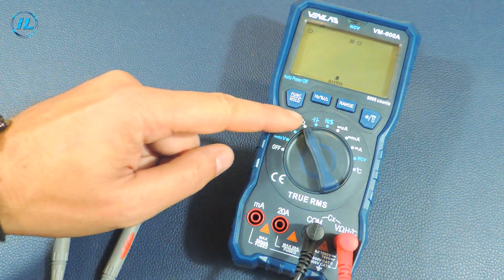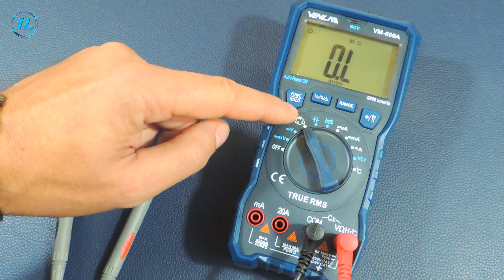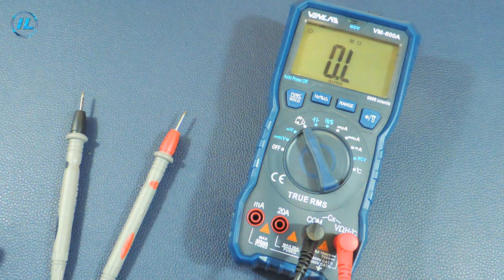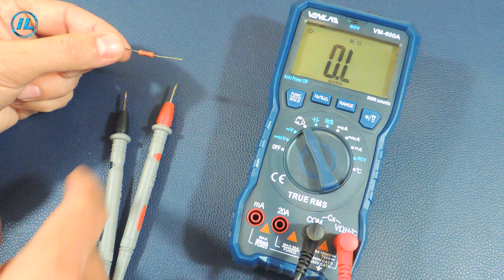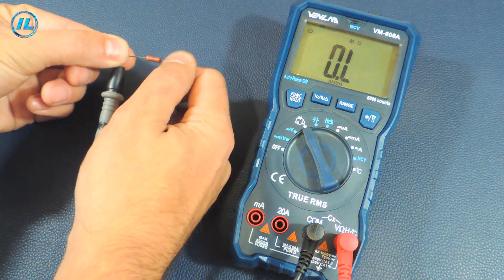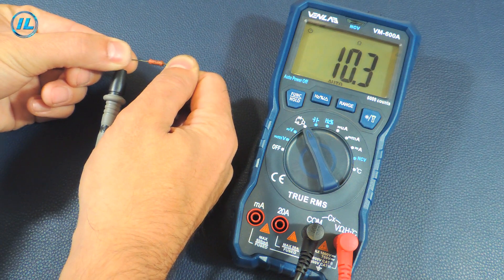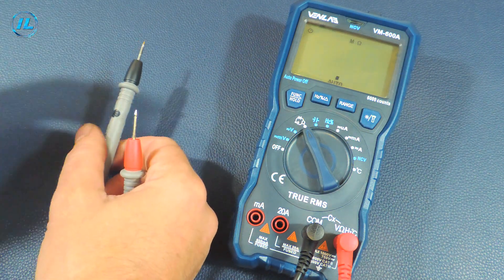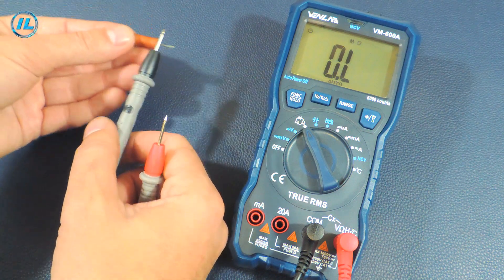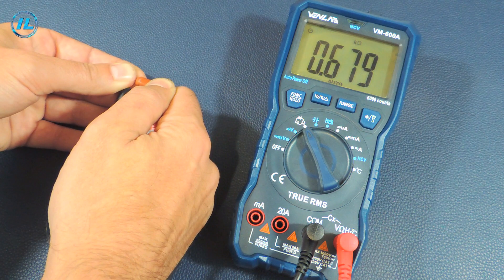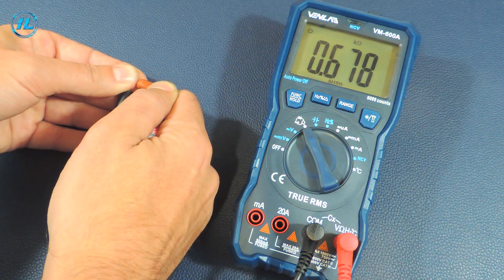The next item combines three measurement modes: checking diodes, checking the electrical circuit, and measuring resistance. First I will measure the resistance. This is a 10 ohm resistor. The device shows exactly 10 ohms. Another resistance at 680 ohms. 679 ohms, that's right.